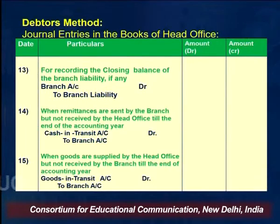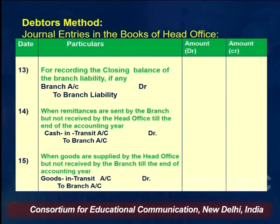To record closing balances of branch liabilities — similar to recording opening liabilities — if outstanding expenses or creditors are given, the entry is: Branch Account debit to Branch Liability Account.